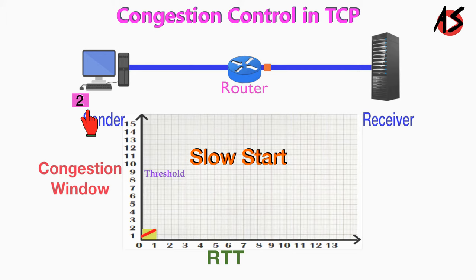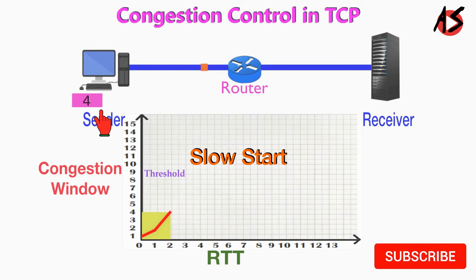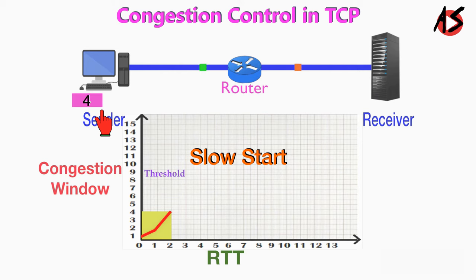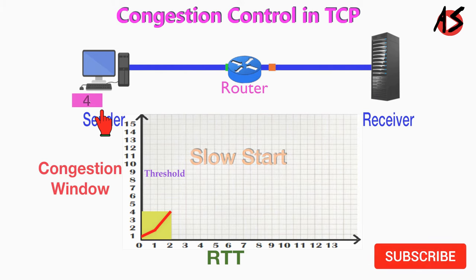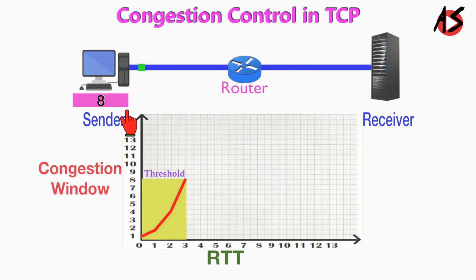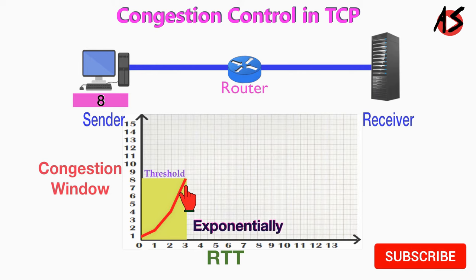Now two more segments can be sent. When two acknowledgments arrive, the size of the window is increased by one MSS for each acknowledgment, which means the congestion window is now four. When four acknowledgments arrive, the size of the window increases by four, making the congestion window eight. You can see in the graph how the congestion window increases exponentially.